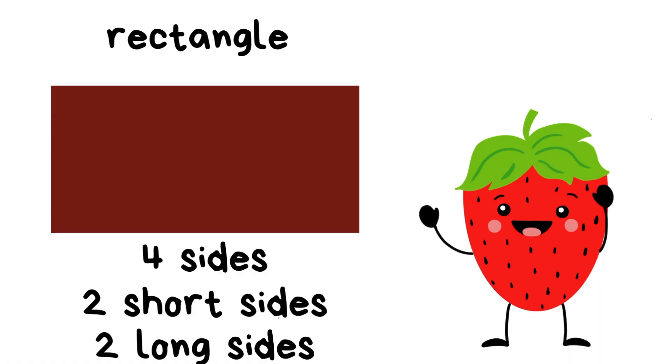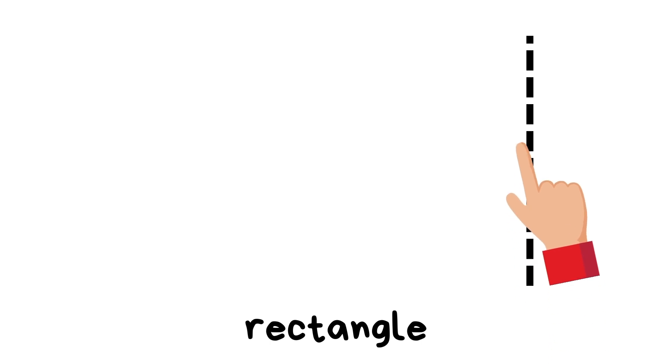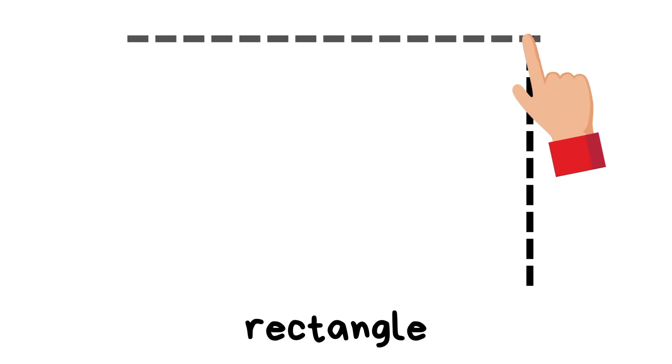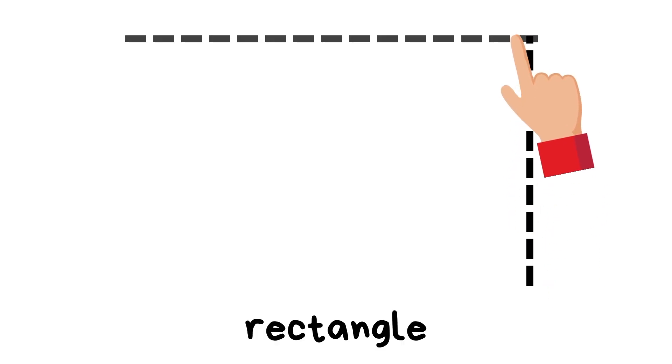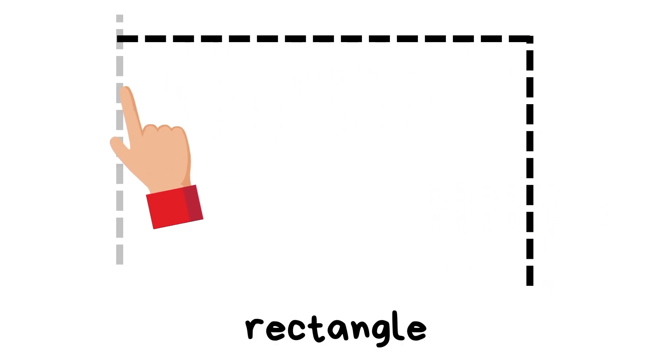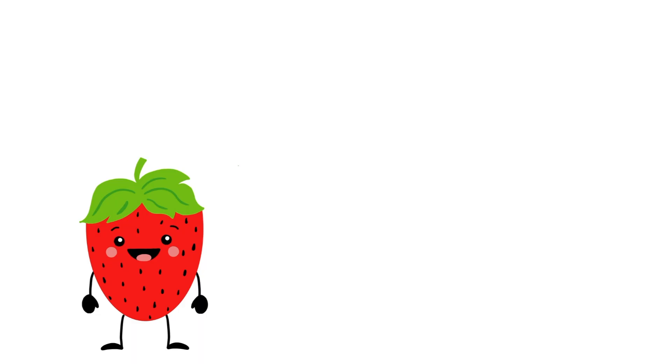On a rectangle, not all the sides are the exact same size — two are longer and two are shorter. Let's practice drawing a rectangle in the air! Put your finger in the air and while you draw your rectangle, say: short, long, long, long, long, short, long, long, long, long. Now your turn!